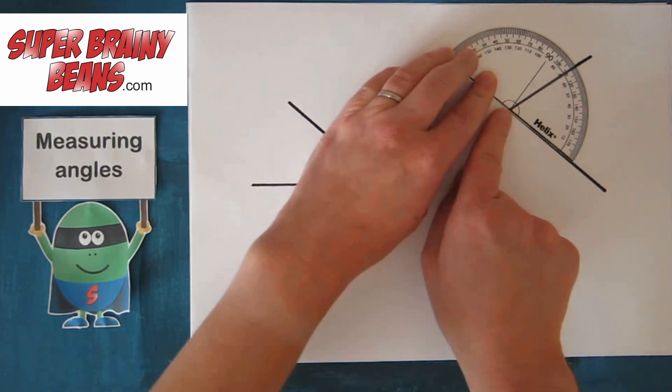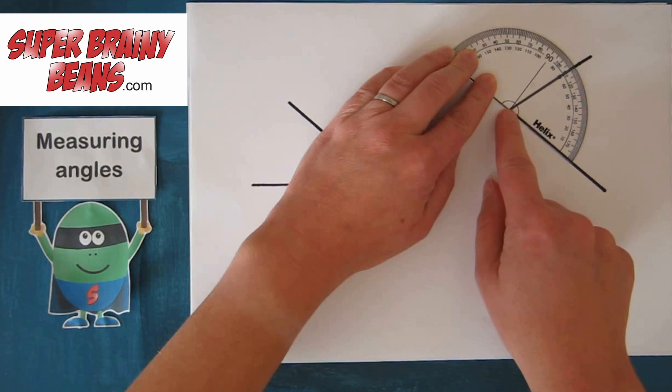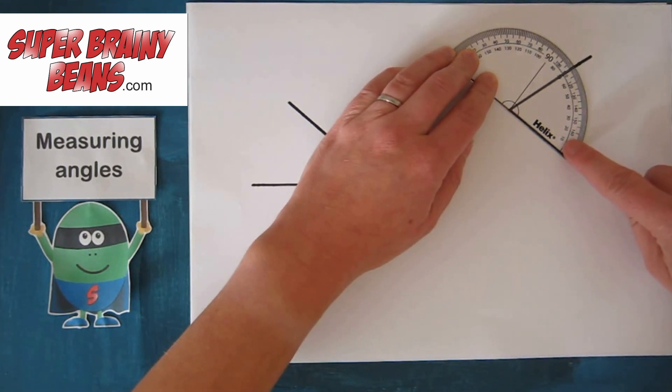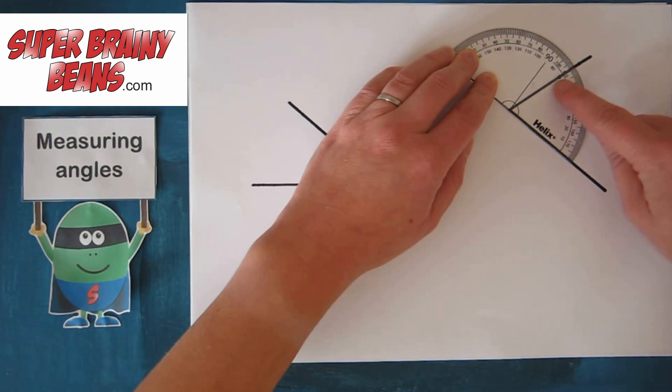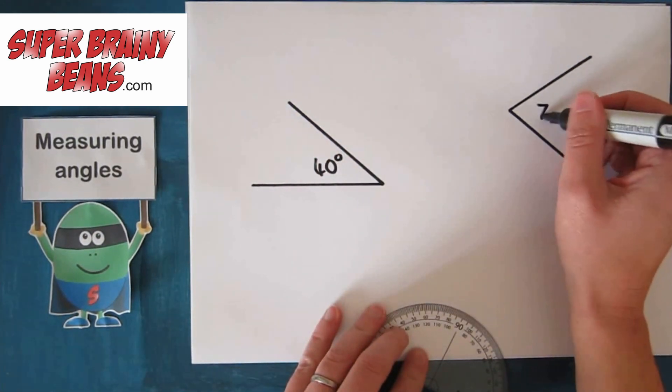So again, we join it in the middle here along the line, make sure it's nice and straight. And use those inner numbers 10, 20, 30, 40, 50, 60, 70. That's where my line joins. So I know this angle is 70 degrees.